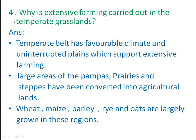Fourth question: why is extensive farming carried out in the temperate grasslands? The temperate belt has a favorable climate and uninterrupted plains which support extensive farming. Large areas of the pampas, prairies, and steppes have been converted into agricultural lands. Wheat, maize, barley, rye, and oats are largely grown in these regions.